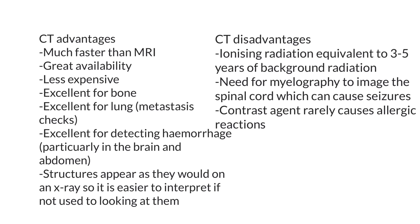Advantages of CT scans: the big one is that it is much faster than MRI. It's also very highly available — there are probably half a dozen or more CT scanners available in Melbourne. Scans and equipment are less expensive. CT is really highlighted when used for bone and for assessing lung metastasis — you get crystal clear images and can image lung metastases down to about a millimeter or two in diameter. It's also really good for detecting hemorrhage around the brain and in the abdomen. An added advantage is that structures appear as they would on an x-ray, so bone is always white, air is black, and soft tissue is a shade of gray — making it easier to interpret.